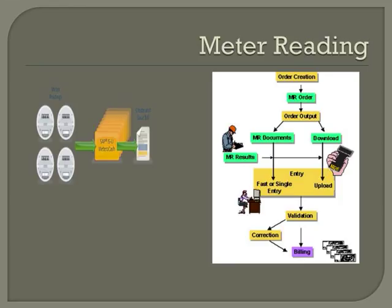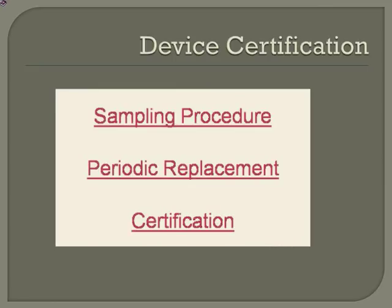Coming to device certifications — devices are equipment with calibrated data. Over the years there is a possibility these calibrations will be upset. To ensure devices are reading correctly, we need to periodically check and certify their working. Quality procedures, sampling procedures, periodic replacement of the device, and certification are all involved. Unless the certification is recorded for the device in the system, the device cannot be technically installed at a particular location. So certification procedures, periodic replacement, and sampling procedures together form the part of device certification.